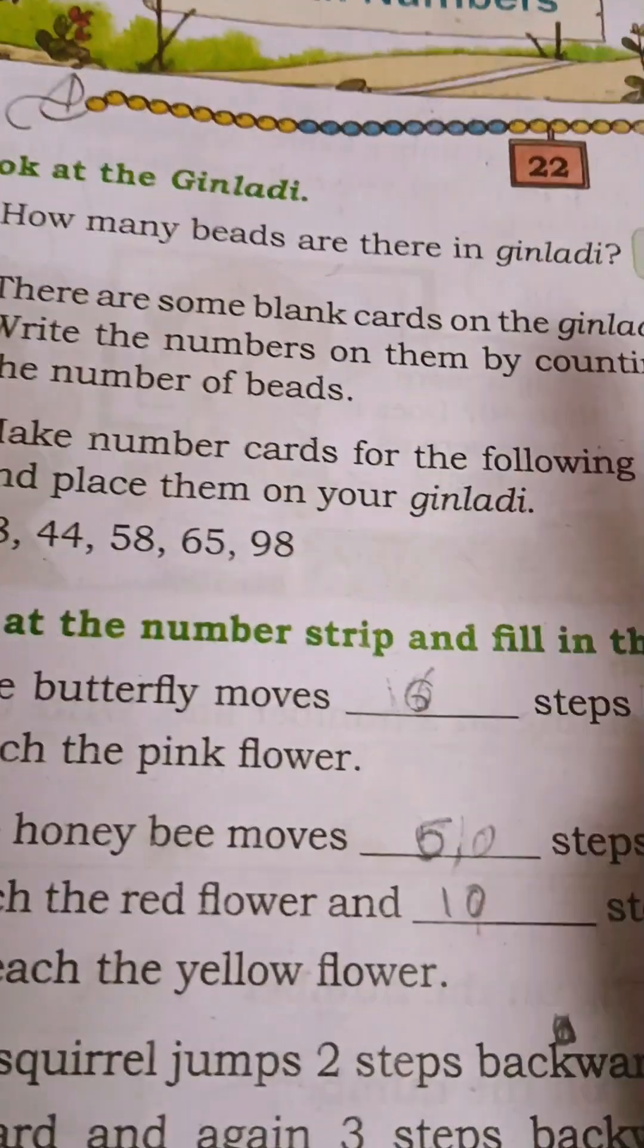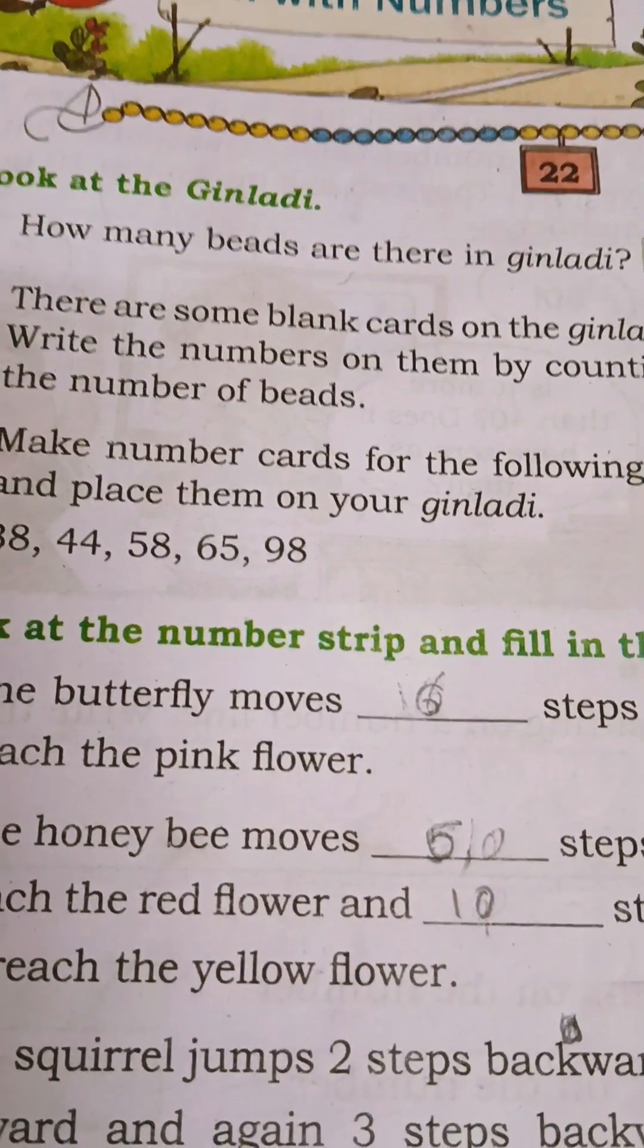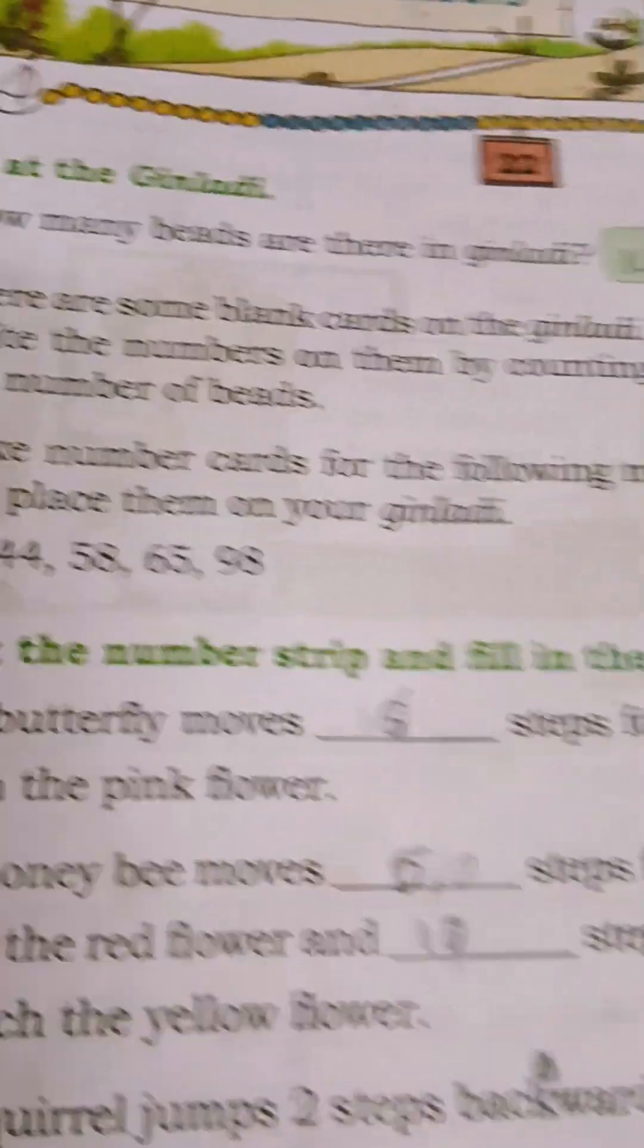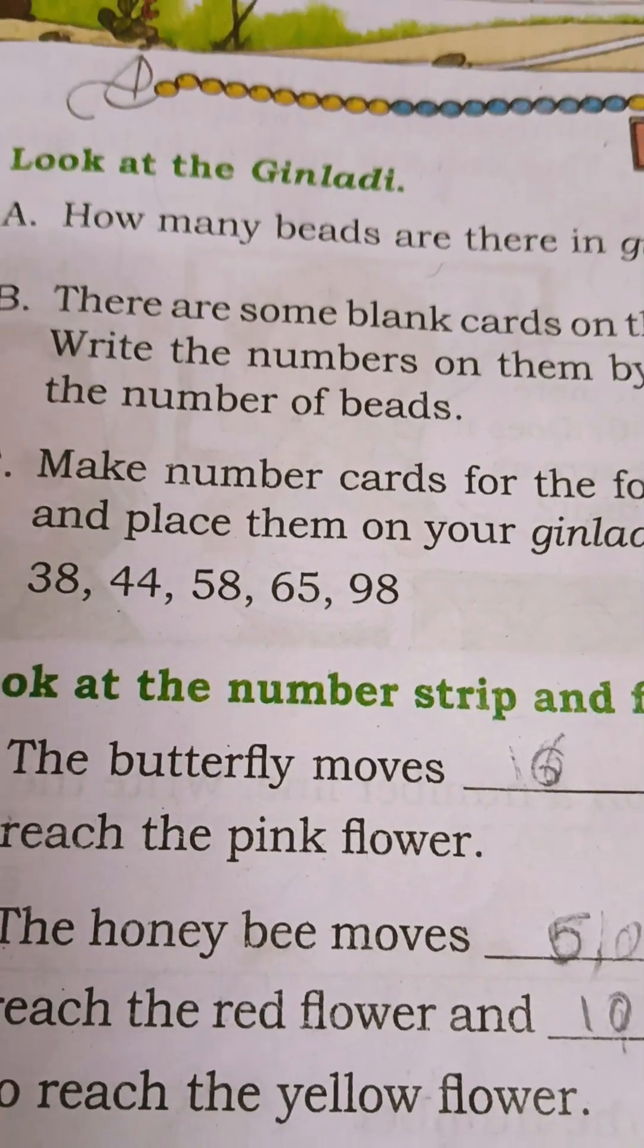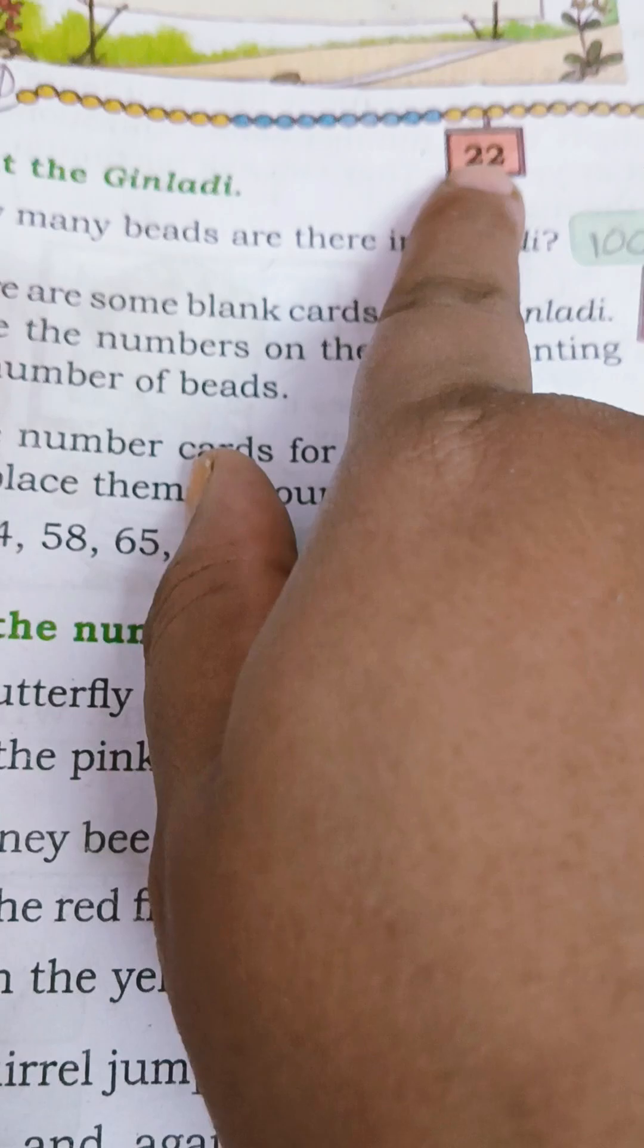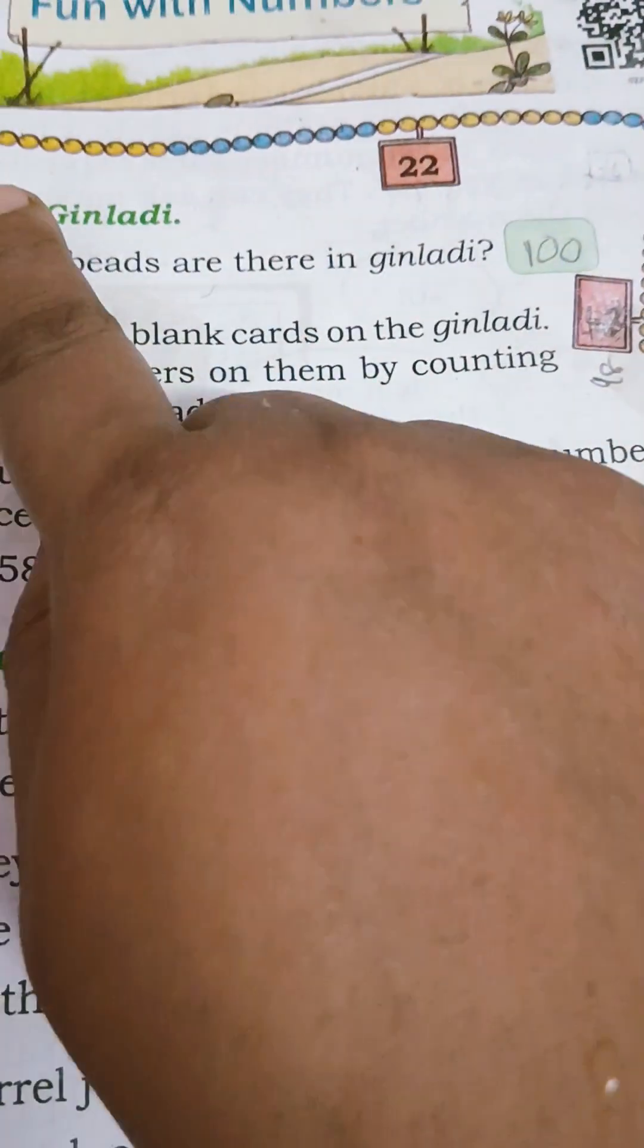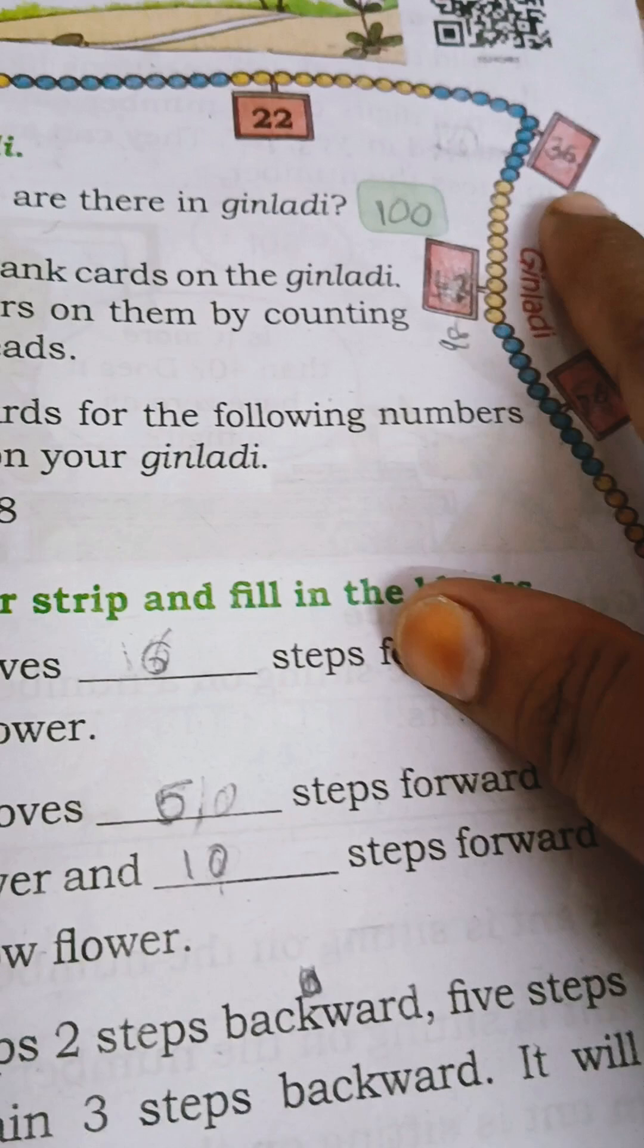There are some blank cards on the Ginladi. Write the numbers on them by counting the number of beads. From here to here, 22 beads. Like that you have to count and write the number. From here to here, 36 beads.